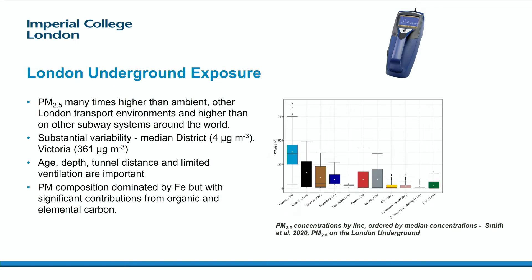If we look at another transport microenvironment — the work we did on the London Underground — we took these relatively small light scattering instruments and calibrated them very carefully against reference techniques within the London Underground environment. The Victoria Line is not the best. Generally, deep lines — Victoria, Northern, Bakerloo — where there are fewer tunnels lead to much higher concentrations. In terms of PM2.5, we got up to nearly a milligram per metre cubed of PM2.5 exposure in some areas in the middle of the Victoria Line.